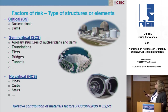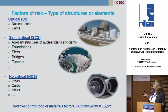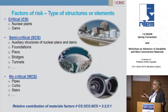Regarding the type of structure, we have defined three main groups. Critical structures — only nuclear power plants and dams — due to the consequence of failure of these structure types. Semicritical structures, which are most structures like tunnels, piers, bridges, etc. And non-critical structures are those that can be replaced easily and whose failure is not very dramatic because they don't have structural properties or requirements.